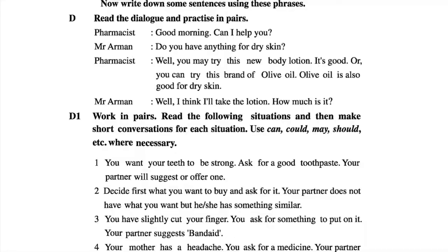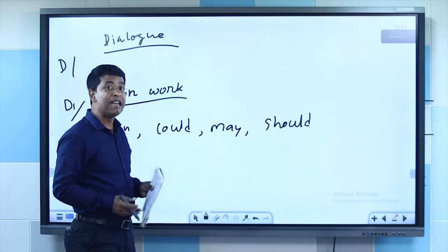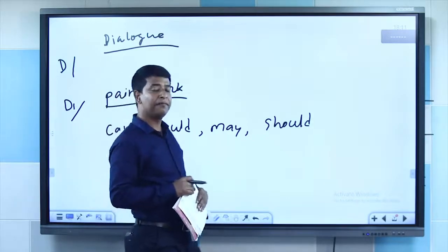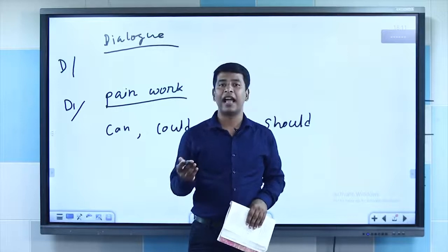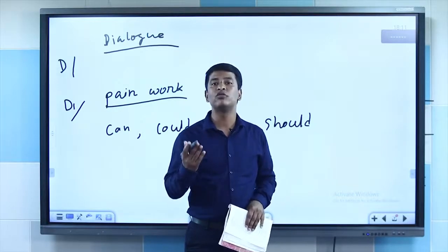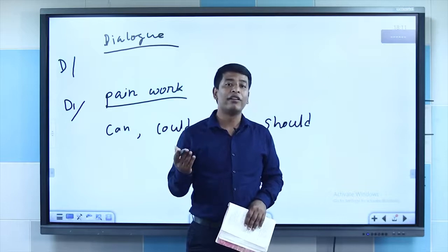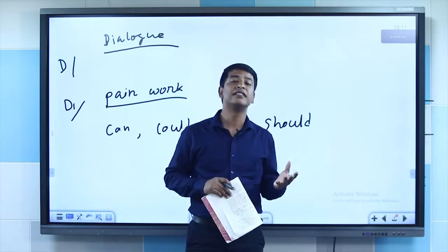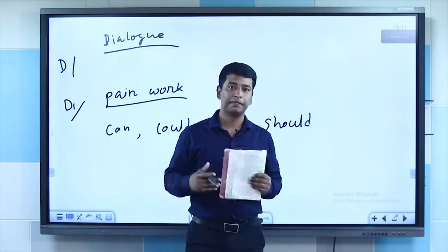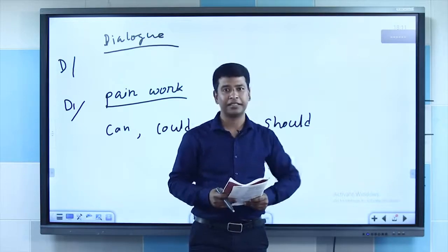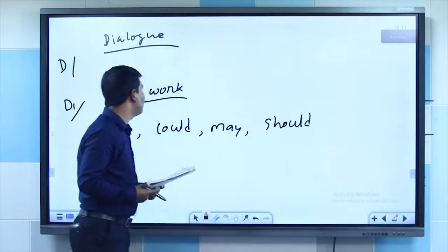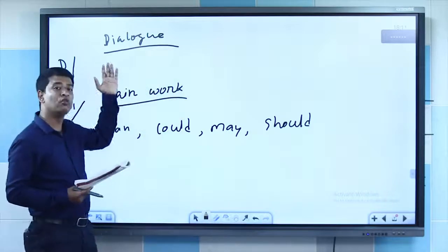You also have to make a dialogue. For example: 'How can I help you?' 'Do you have anything for dry skin?' 'Yes, I have aloe vera oil, olive oil, and ointment. Which one do you want?' 'I need aloe vera oil.' 'Here it is.' 'Thank you.' Make a dialogue like this with your partner.